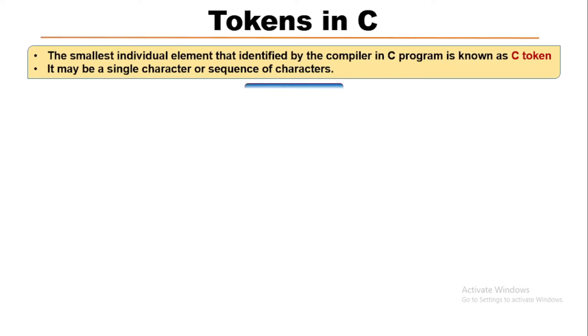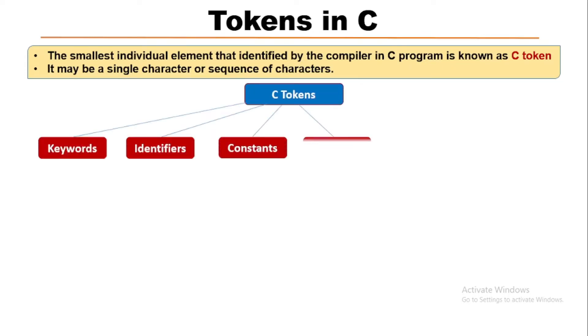There are six types of C tokens: keywords, identifiers, constants, strings, operators, and symbols.